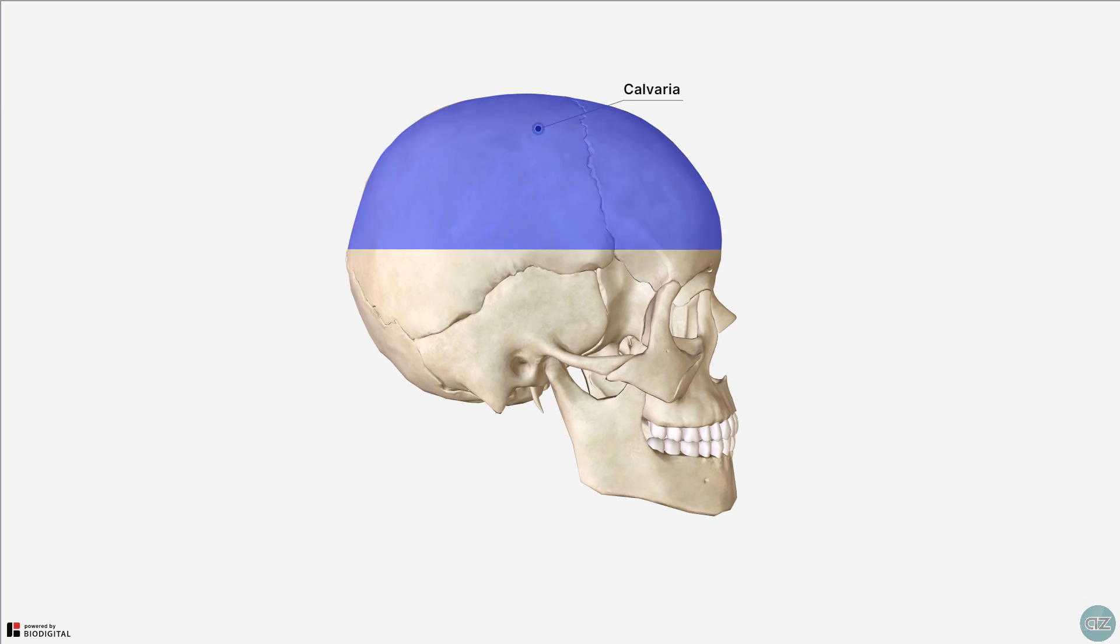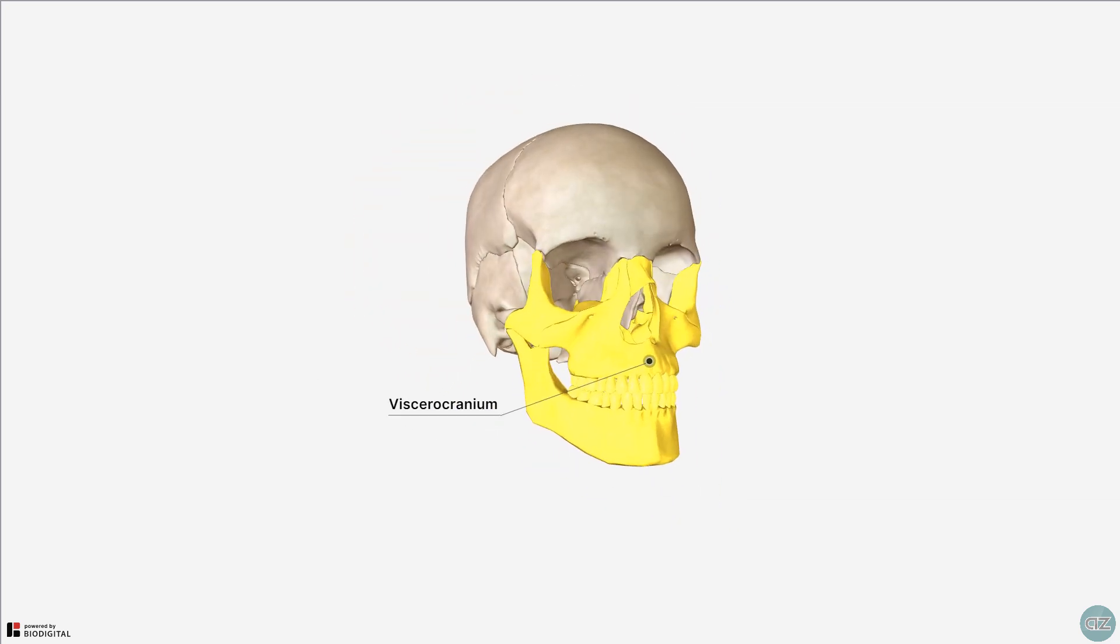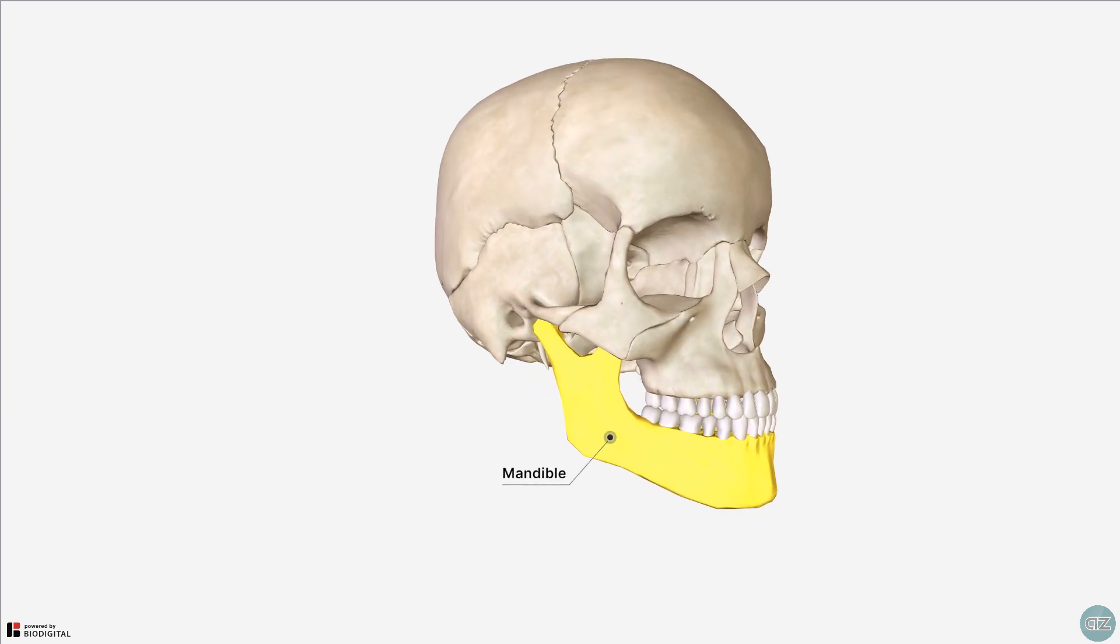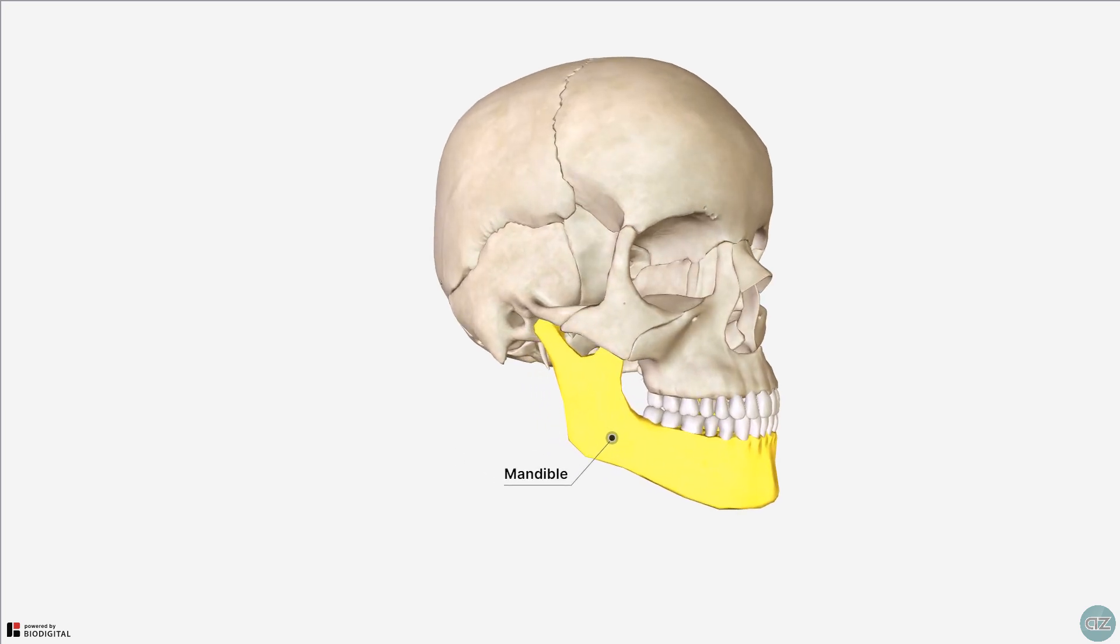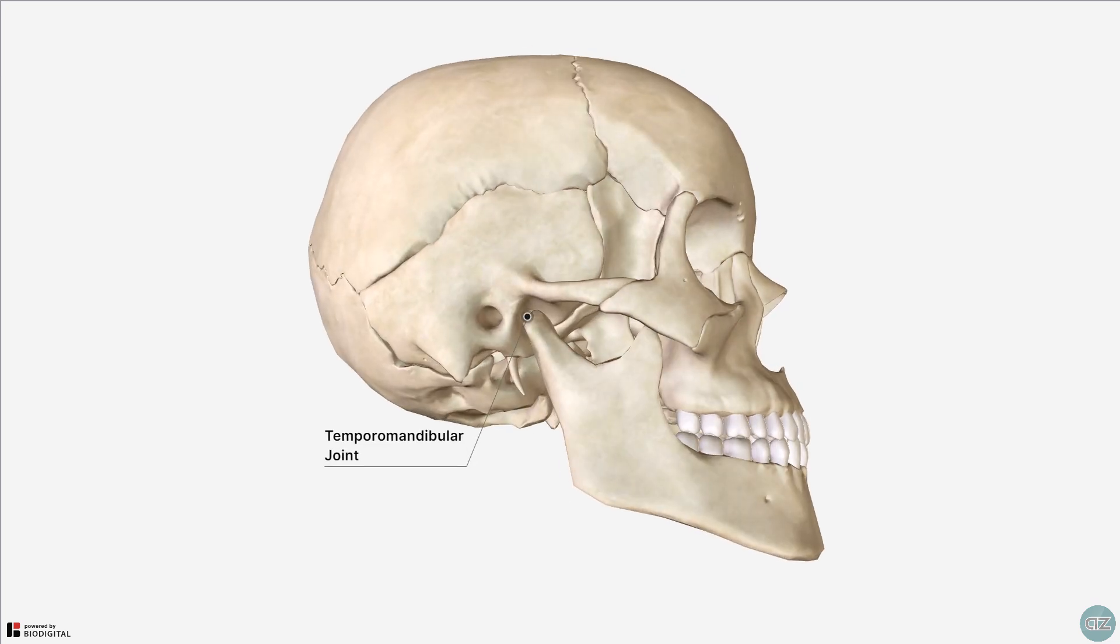The lower part of the neurocranium forms the cranial base. The lower part of the skull is called the facial skeleton, or the viscerocranium. There are 14 bones which make up the facial skeleton, and we'll take a look at these in more detail in another tutorial. The mandible is the lower jaw bone and is the only movable bone of the skull, which articulates with the temporal bone at the temporomandibular joint. We will take a look at this bone separately in another tutorial.